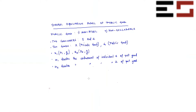One more thing we'll be needing is how the public good is produced. There is some technology available in this economy that can convert private good into public good — that's basically the production function. So G = f(X) is the production function, where X is the private good input and G is the public good output. So the private good in this economy has two uses: one as an input in the production of the public good, and the other as a direct consumption good.